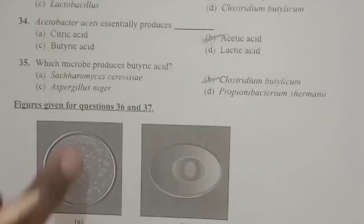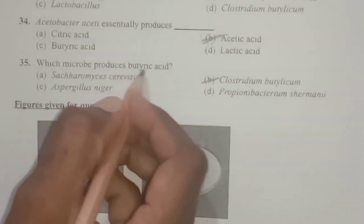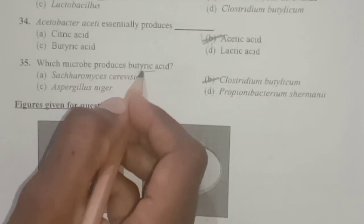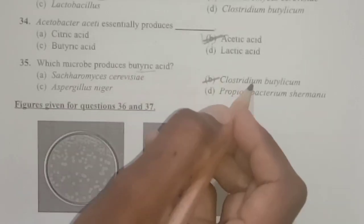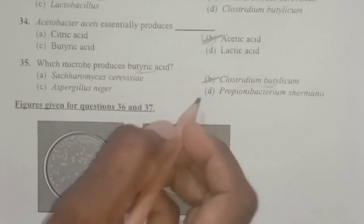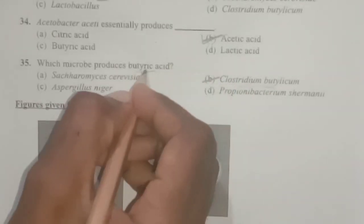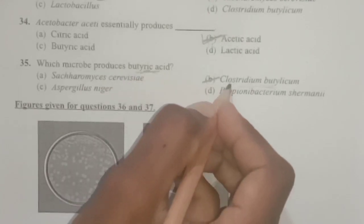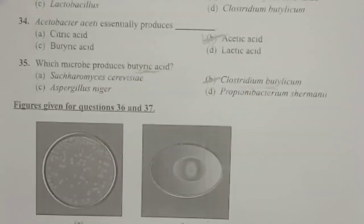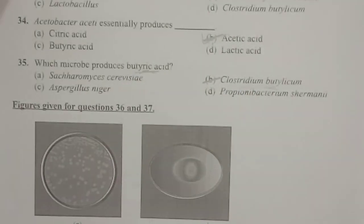Next: which microbe produces butyric acid? It is Clostridium butylicum. The microbe that produces butyric acid is Clostridium butylicum.